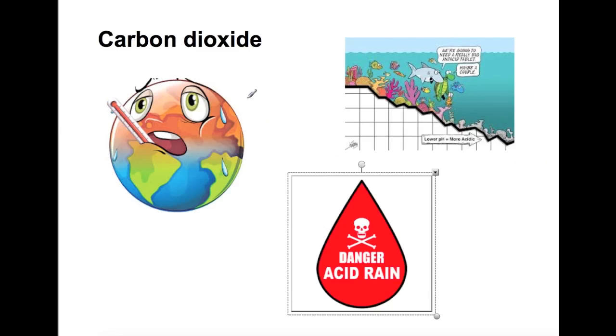The most widely known problem is global warming. Carbon dioxide is important for the warmth of the earth. Without carbon dioxide we would be significantly colder than we are now. However, through human activity we have raised the levels of carbon dioxide and therefore caused the greenhouse effect. This caused the earth to warm up more than it should.